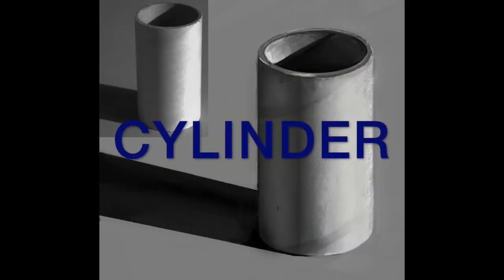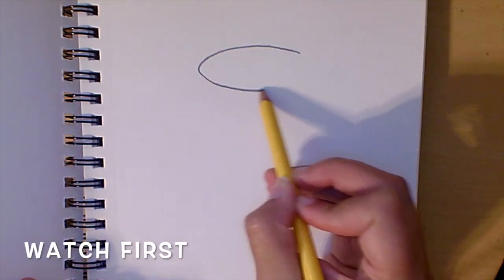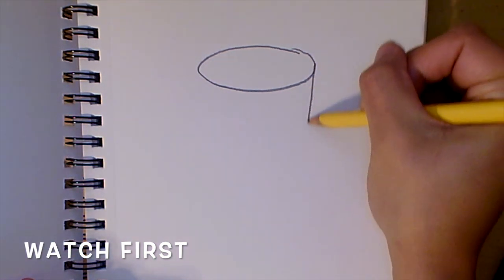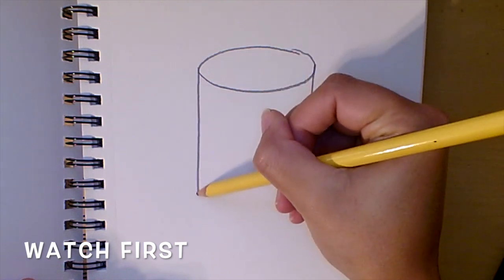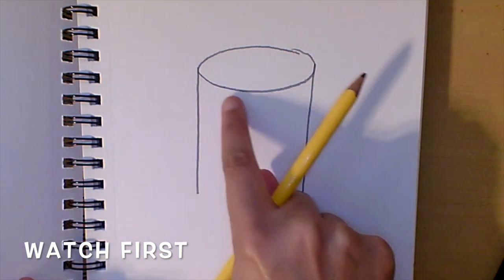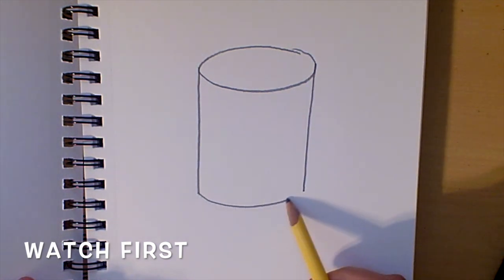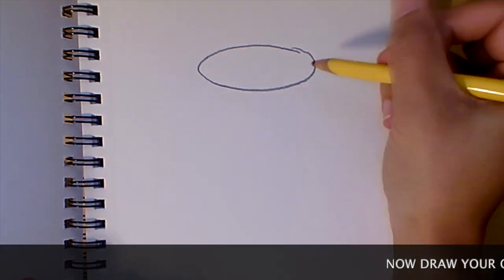Cylinder. To make a cylinder, start with a circle shape. Then, connect two straight lines coming from the ends of your circle shape. And lastly, add a curved line that's the same as the bottom of your circle shape. Now, draw your own cylinder.